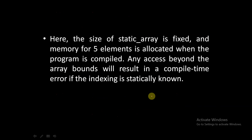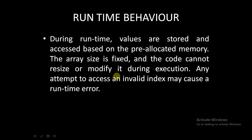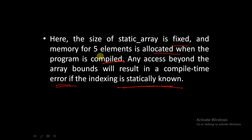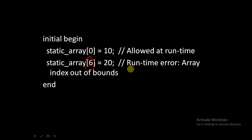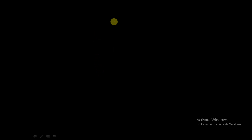The size of the static array is fixed and the memory of five elements is allocated when the program is compiled. Any access beyond the array bounds will result in a compile error if the indexing is statically known. During runtime, values are stored and accessed based on the pre-allocated memory. The array size is fixed and the code cannot resize or modify it during execution. Any attempt to access an invalid index may cause a runtime error — array index out of bounds. This is the case with fixed arrays.